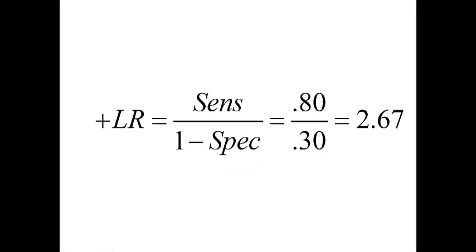The ratio of 80% over 30% is the likelihood ratio. To be more precise, a positive likelihood ratio is sensitivity over 1 minus specificity. In our case, that's 80% over 30%, giving a likelihood ratio of 2.67. To interpret this literally, someone with the disease is 2.67 times more likely to test positive than someone without the disease.